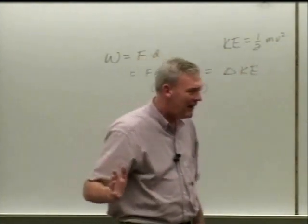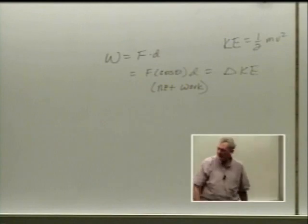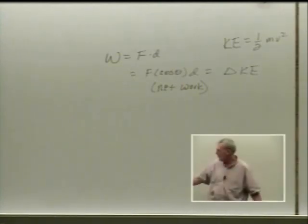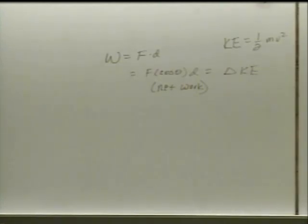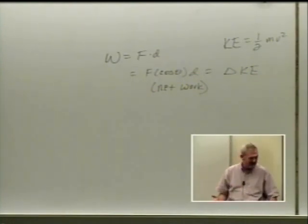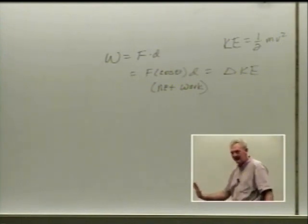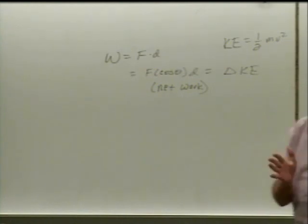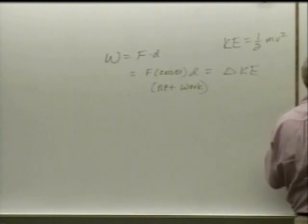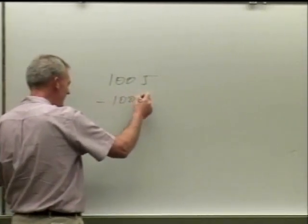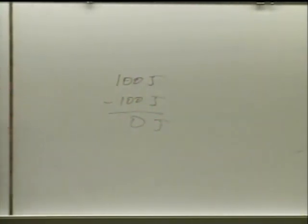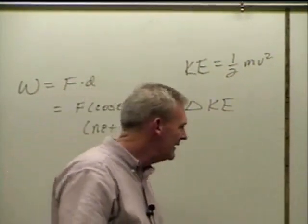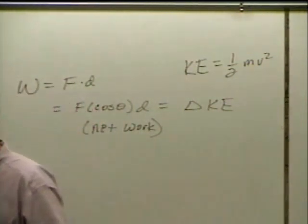But then you go, wait a minute. You're applying a force to something and sliding it along—you're doing force times distance equals work. Correct. But it's the net work that equals the change in kinetic energy. What's working against it? The friction. Between my sliding with a constant velocity and friction pushing back with a constant force, there's no acceleration. I might have done 100 joules of work, but friction did negative 100 joules of work, so the net work is zero joules, so there's no change in my kinetic energy.